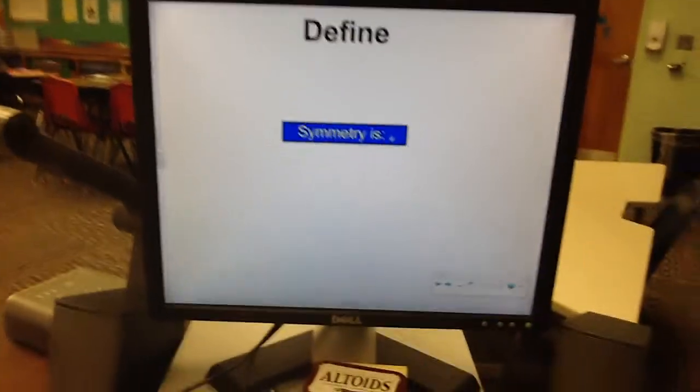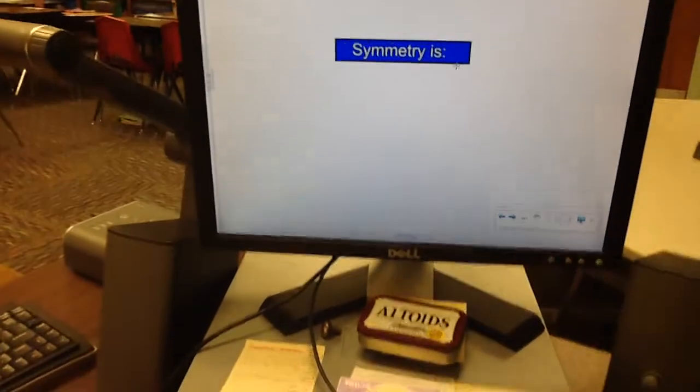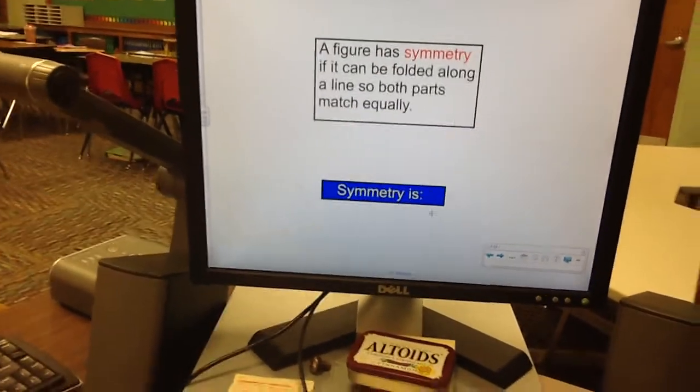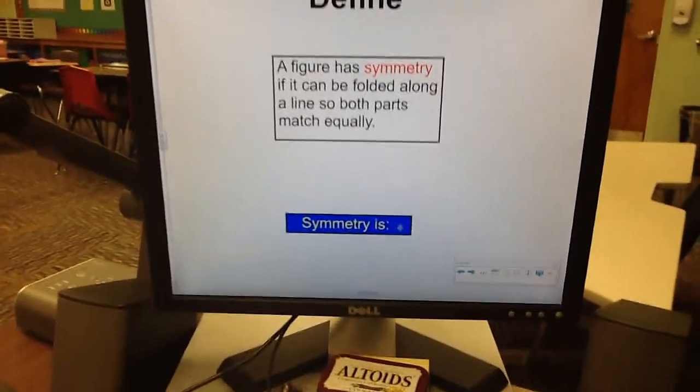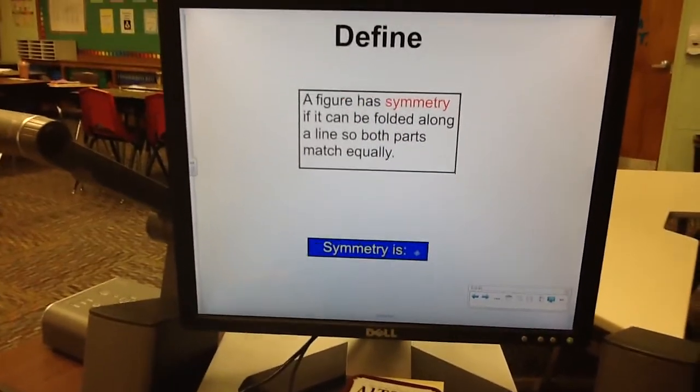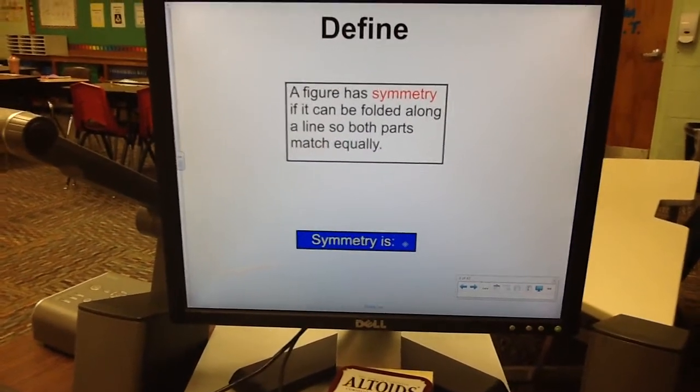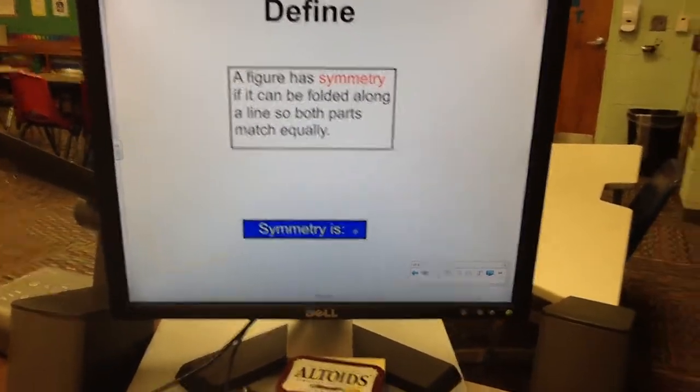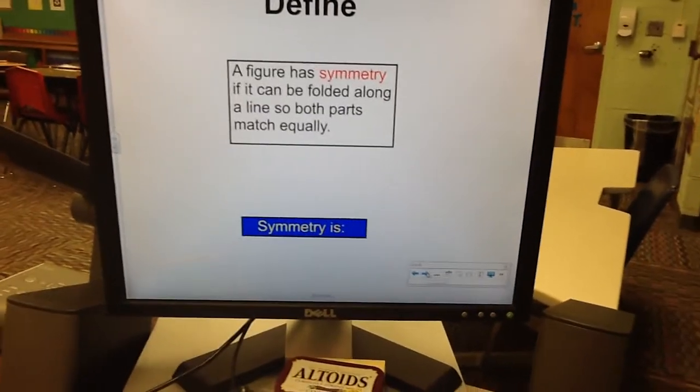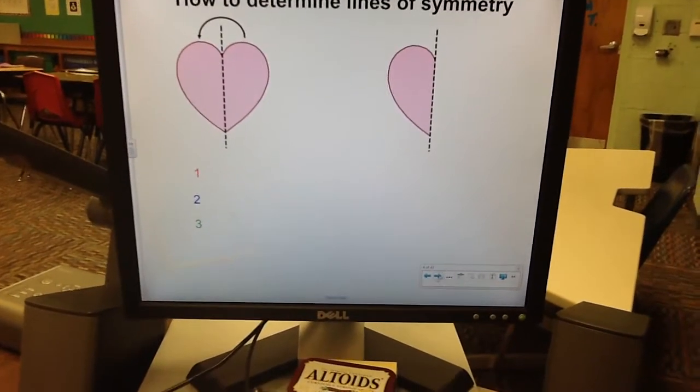First of all, let's define symmetry. You can see the word right there. You should write it down, and you should write the definition down. I'm not going to leave it up long, but you can pause the video, write it down, and hit play. A figure has symmetry if it can be folded along a line so that both parts match equally. Write that down, pause it, and hit play again.